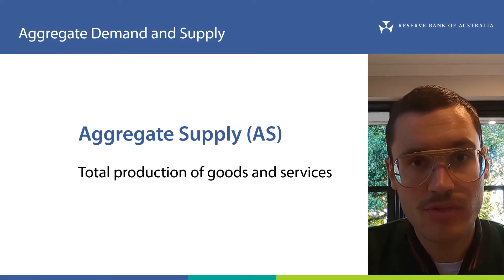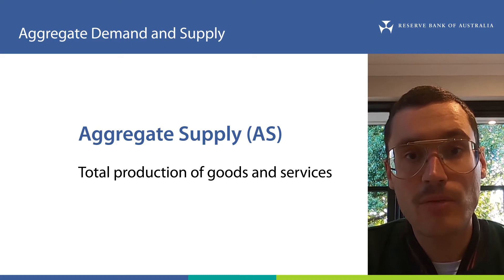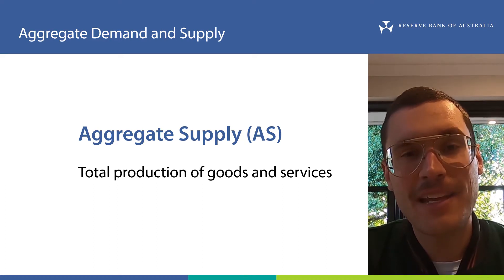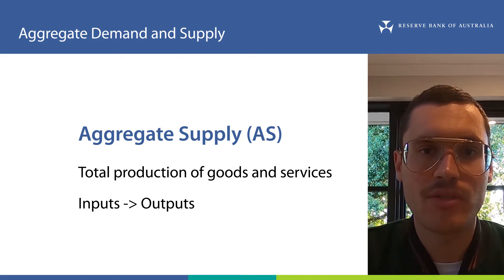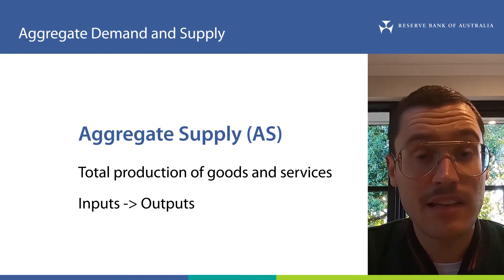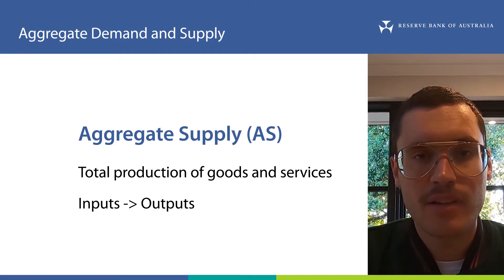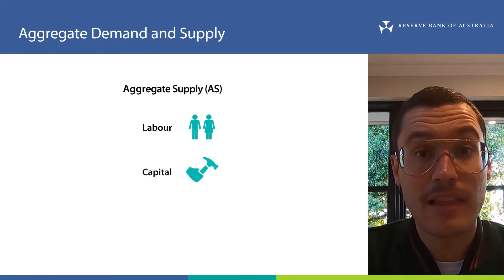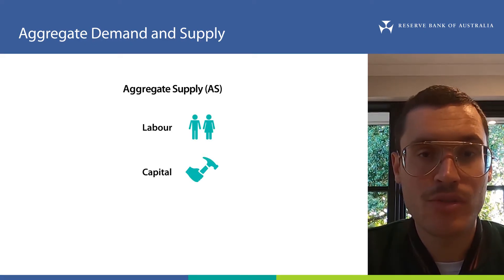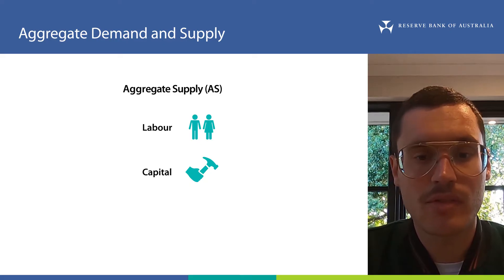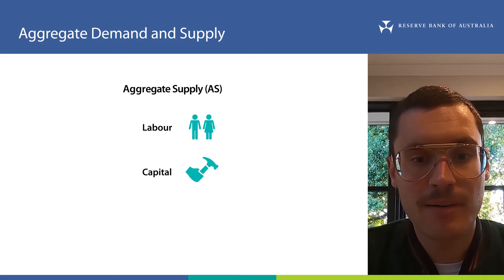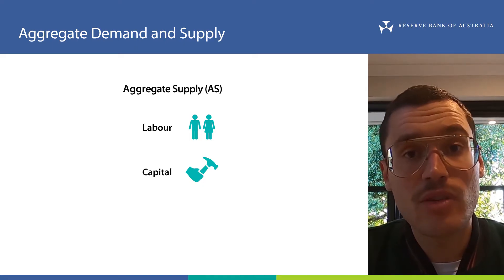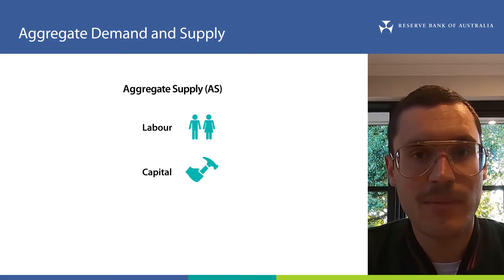Aggregate supply is the total production of goods and services in the economy. The production of goods and services — what we call outputs — is determined by how many inputs are available and how efficiently they are used. There are two main types of inputs: labour and capital. Labour is the efforts of workers to produce goods and provide services. Capital are the inputs that we can measure that are not labour, like machines and buildings — the tools used alongside labour to produce something.